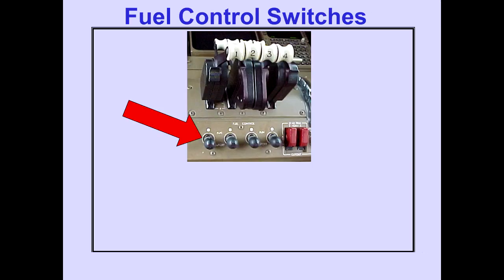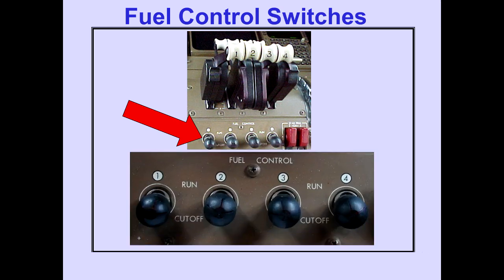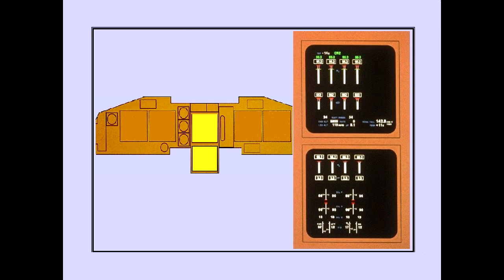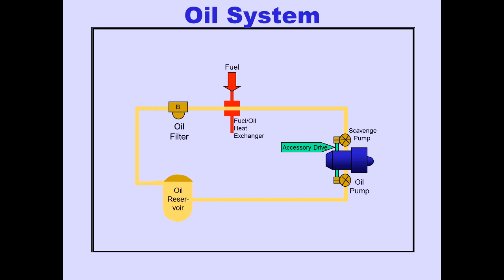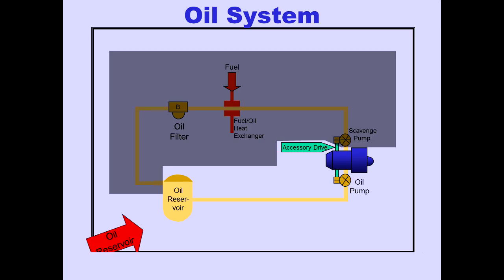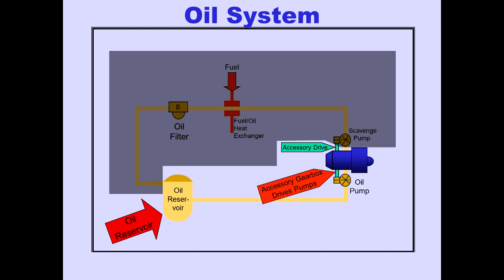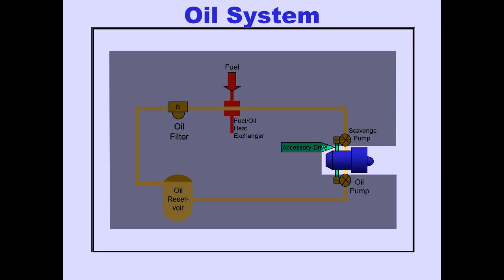Fuel control switches are located on the control stand. Engine indications are electronically displayed on ICAS. Now, let's discuss the oil system. The oil system is self-contained. It cools and lubricates the engine bearings and accessory gearbox. Oil is supplied from the reservoir to the oil pump. The pump is driven by the engine's accessory gearbox. The oil is distributed to the engine's gearbox and bearings.